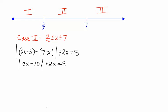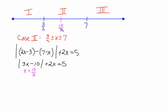At this juncture, we look for the key number inside the remaining absolute value. The key number is x equals 10/3. That is bigger than 3/2 — 3/2 is 1.5, and 10/3 is 3 and 1/3 — so it falls in case 2. We will again have subcases.